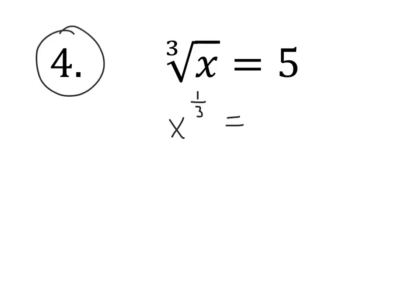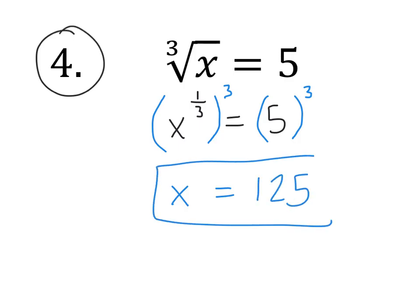So x to the one third power equals 5. Now the process of getting x by itself on this problem is the same as it was in problem one. We want to raise both sides to the reciprocal of one third. The reciprocal of one third is 3, so in other words we need to cube both sides. By doing that, we get x by itself on the left, and 5 cubed is 125. And that is our final answer there.